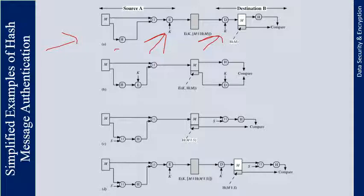In the second example, only the hash code is encrypted using symmetric encryption. This reduces the processing burden for applications that do not require confidentiality. The third example shows that it is possible to use a hash function but no encryption for message authentication.